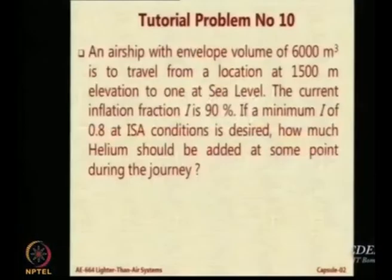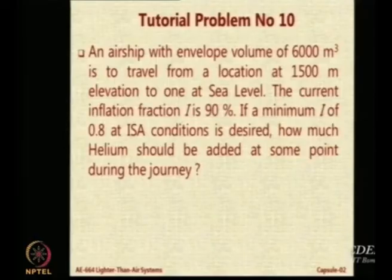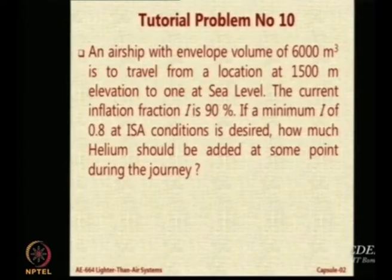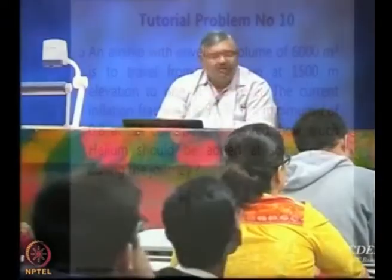This airship is flying from a location which is at 1500 meters to a location which is at sea level. So the delta h required is 1500 meters, and the value of inflation fraction currently is I1. The inflation fraction ratio I2 by I1 is equal to sigma1 by sigma2.